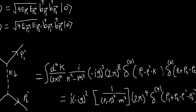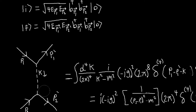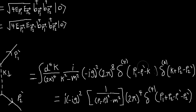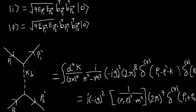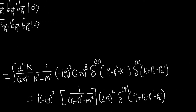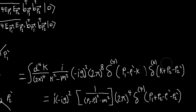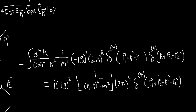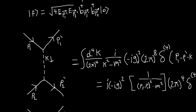We have our two delta functions that enforce conservation of momentum at each of these vertices. The first one is p1 minus p1 prime minus k, and the other one is k plus p2 minus p2 prime. We can just do one of the integrals over k — for example, this one replaces k with p1 minus p1 prime, taking out k in the propagator denominator. Then we still have the other delta function remaining, which again just enforces conservation of momentum and energy: the sum of the momentum of the first two particles has to equal the sum of momentum of the new two particles.